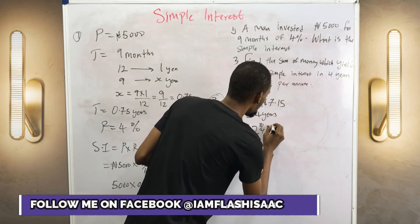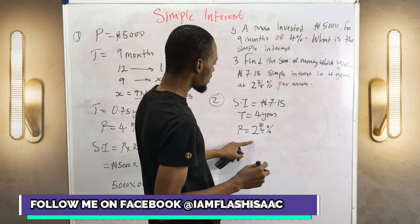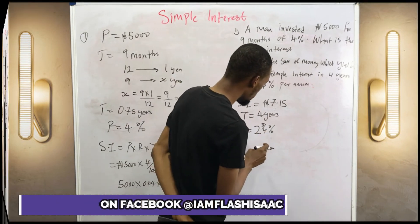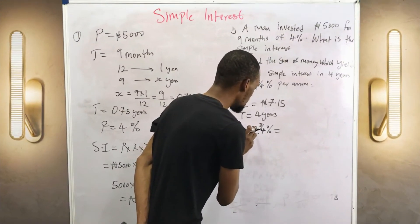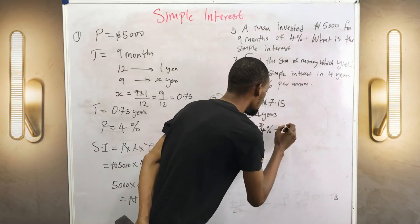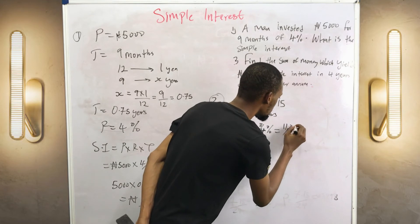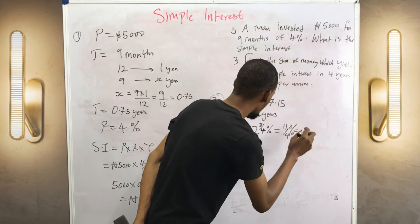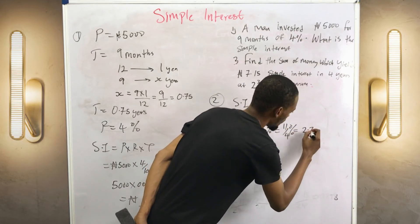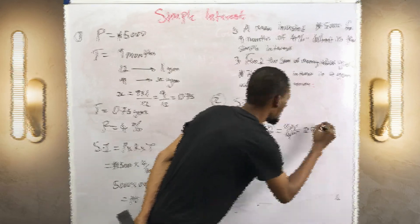This is in mixed fraction, so let's convert it to improper fraction. 4 times 2 is 8, 8 plus 3 is 11, so 11 over 4 percent. 11 over 4 percent is 2.75 percent. So that is the rate, 2.75.